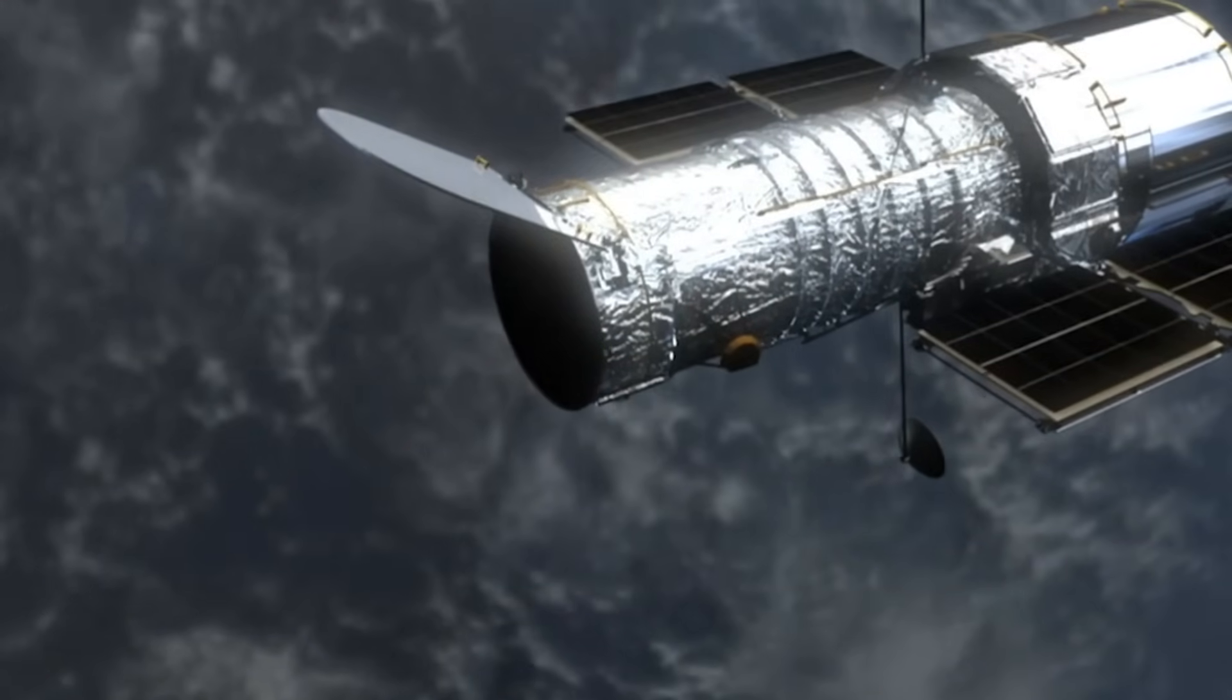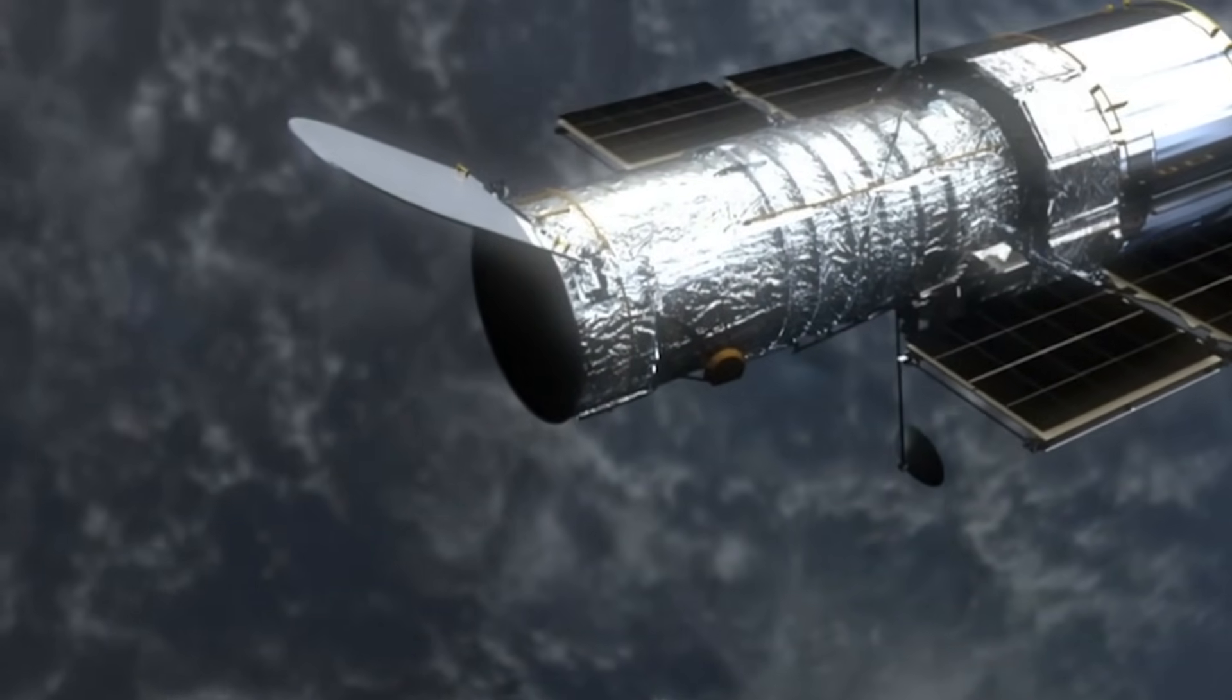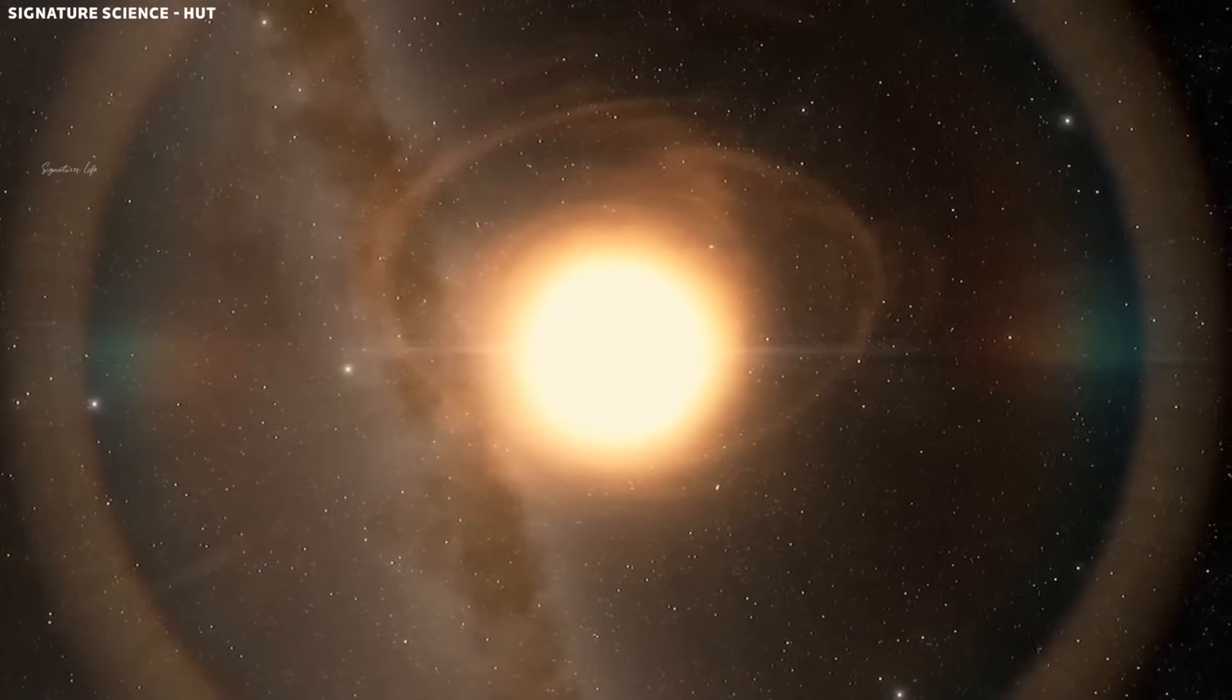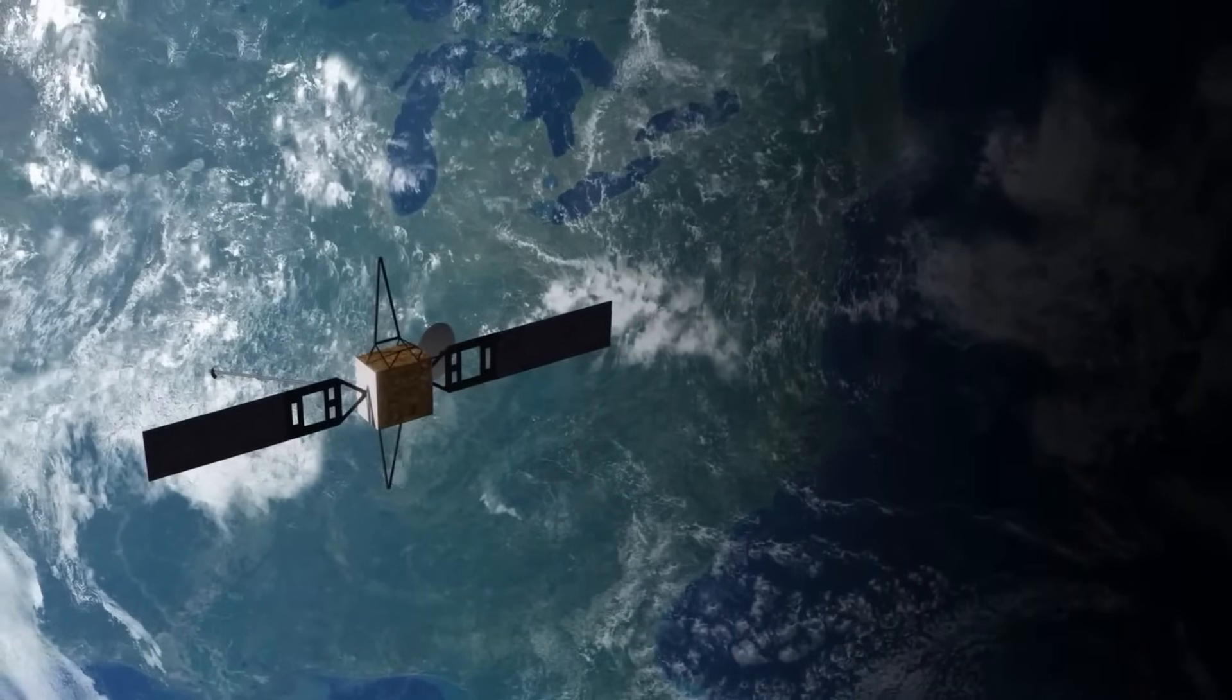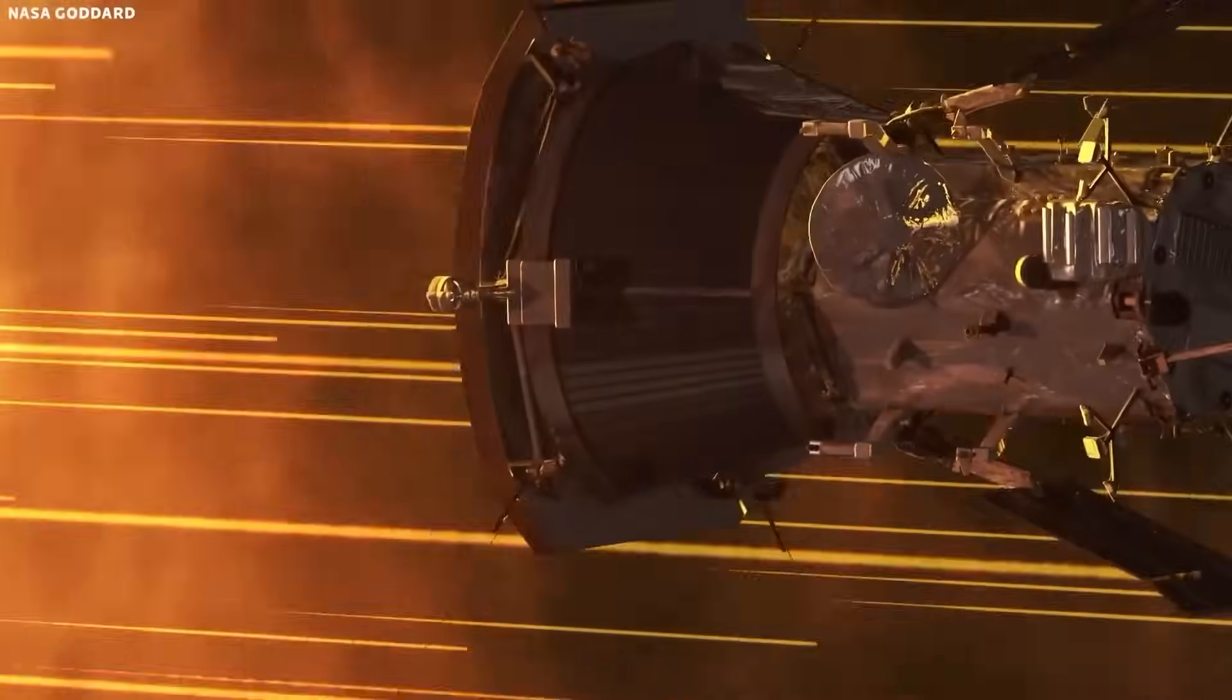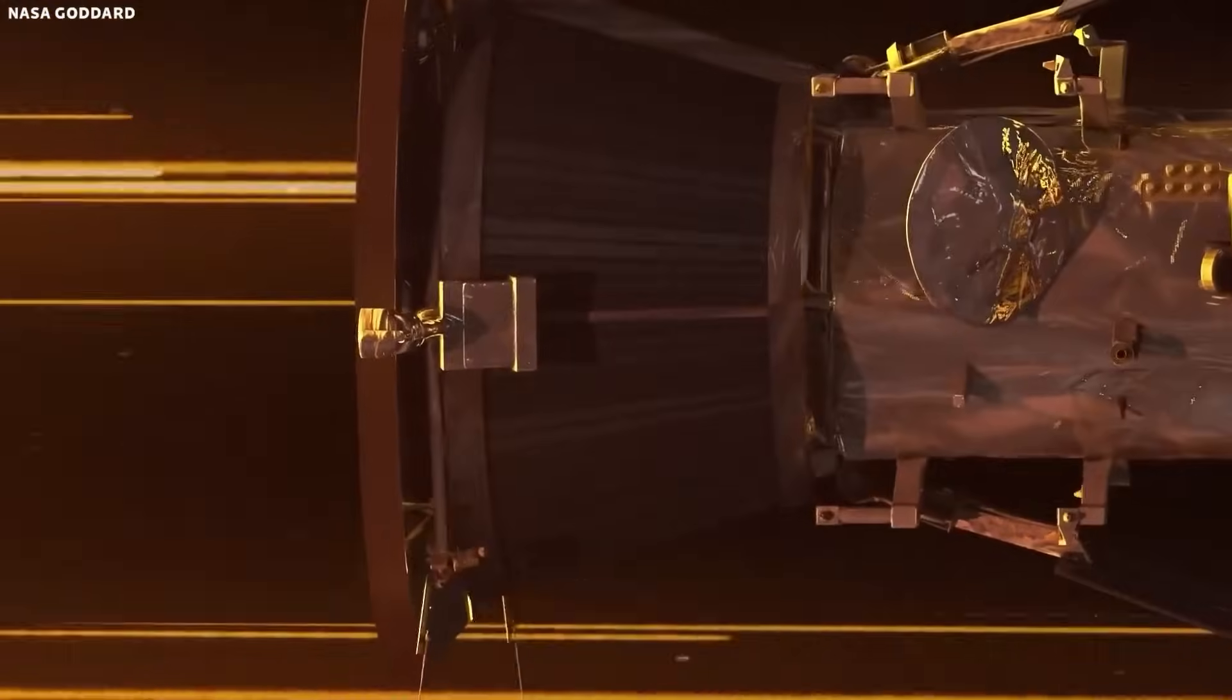But what about our man-made marvels hovering above the surface of the Earth? The surge in brightness, coupled with potential gamma and X-ray radiation, could have implications for satellite operations, especially those in higher orbits. There might be a need for protective measures to ensure that our satellite infrastructure remains unaffected by the high-energy particles from the explosion.